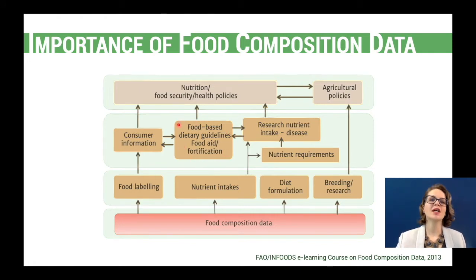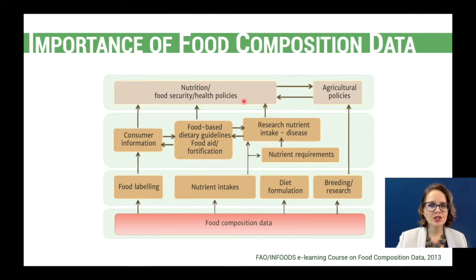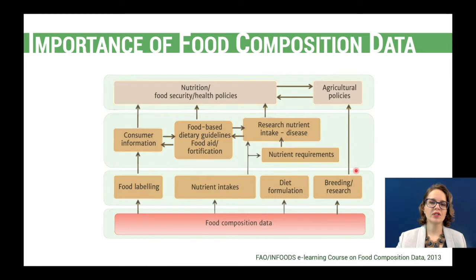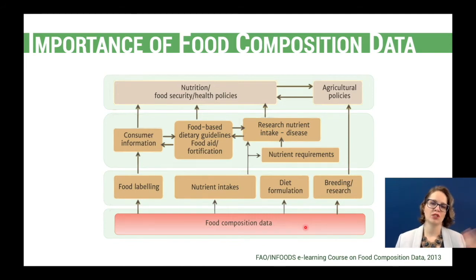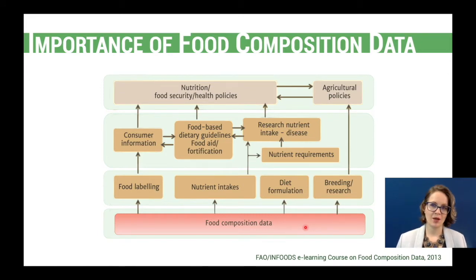All these activities are used as a basis for consumer information, and they are the basis for policies in nutrition, food security, and health. Food composition data is also important for breeding and research, which will result in agricultural policies. So we can see how food composition data is important for many different activities in nutrition, and why they are really important for establishing appropriate policies in different areas.